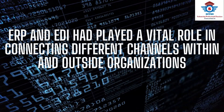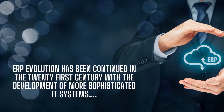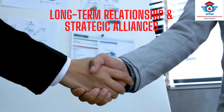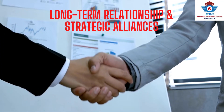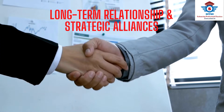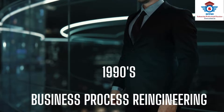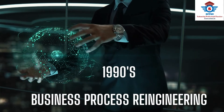ERP evolution continued into the 21st century with the development of more sophisticated IT systems. The relationship between buyers and suppliers moved one step further, from normal partnerships to long-term relationships and strategic alliances. Manufacturers, suppliers, and retailers are now coming together with their strengths and technology to ensure competitive advantages through new product development, distribution channels, cost reduction, and many more programs. An integrated supply chain gives considerable competitive advantage to the individual actors participating in the chain. In the 1990s, business process re-engineering concepts resulted in growing interest for cost reduction and increased process efficiencies.